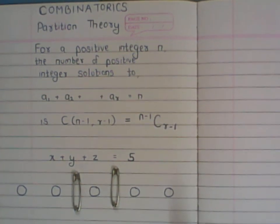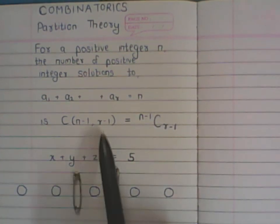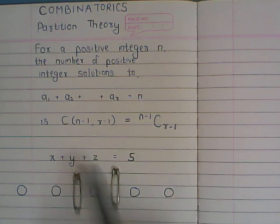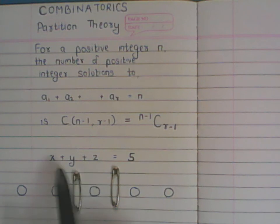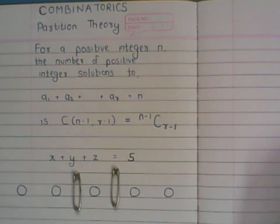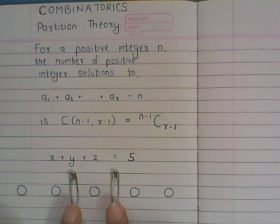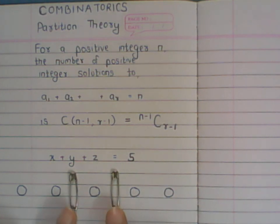This is actually where the r minus one comes from: if you want to make r groups, you need r minus one partitions. Here we want three groups, so we use two partitions to separate the balls into three sections.